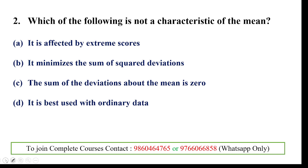Next question: which of the following is not a characteristic feature of the mean? It is affected by extreme values — that's correct, extreme values influence the mean. It minimizes the sum of squared deviations — also correct; the sum of squared deviations from the mean is minimized. The sum of deviations about the mean is zero — also correct.